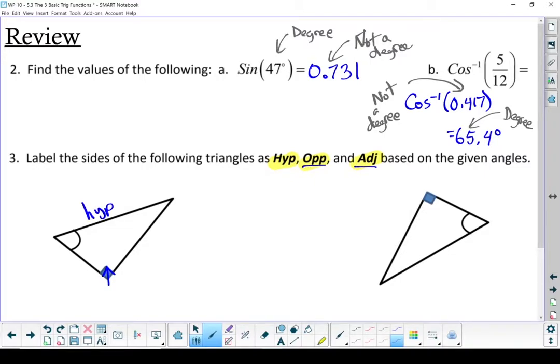But this opposite and adjacent parts, those ones all depend on which angle we're looking from in the triangle. We are looking from that angle right there. So the one on the far side of the triangle is my opposite side, and the one right beside it is my adjacent side.